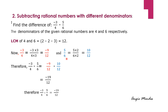We do the same with the next rational number. We multiply the denominator by 2 to get 12, which is the LCM, and since we have multiplied the denominator by 2, we also multiply the numerator by 2. The new rational number is 10 upon 12. Performing subtraction on the given rational numbers minus 3 upon 4 and 5 upon 6, we get minus 9 upon 12 minus 10 upon 12. Since the denominators are the same, we take the common denominator and subtract only the numerators. Minus 9 minus 10 gives us minus 19, so the result is minus 19 upon 12.